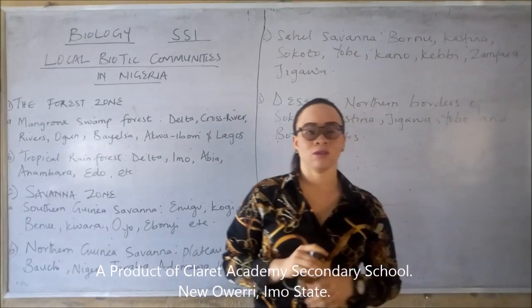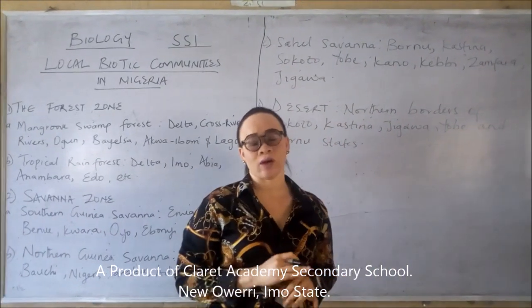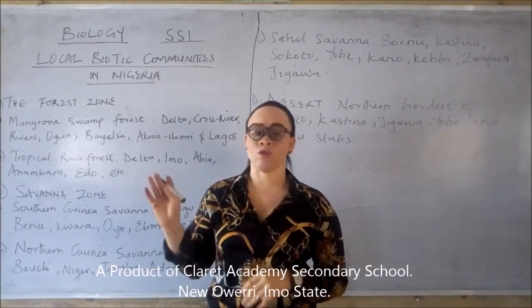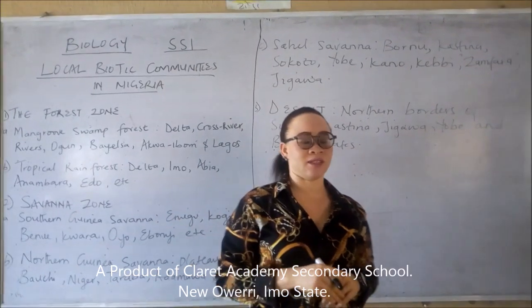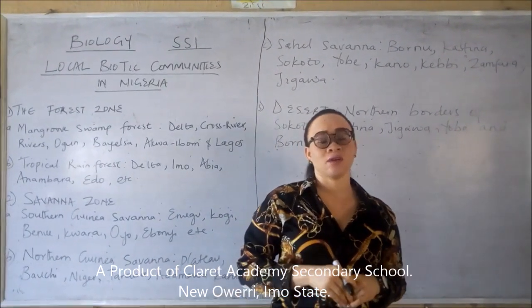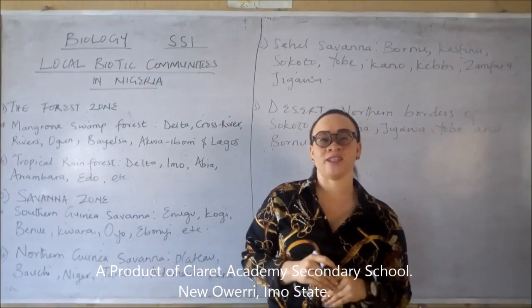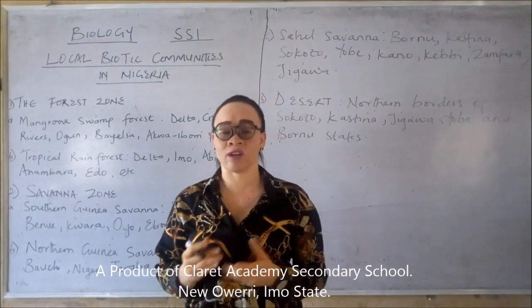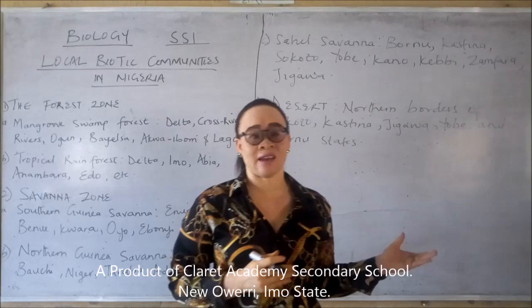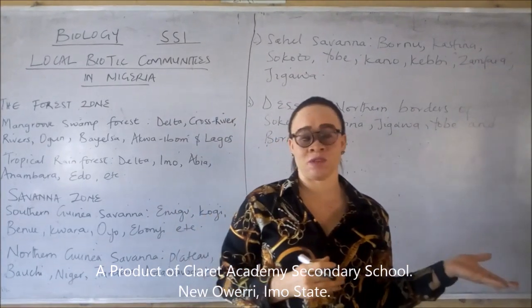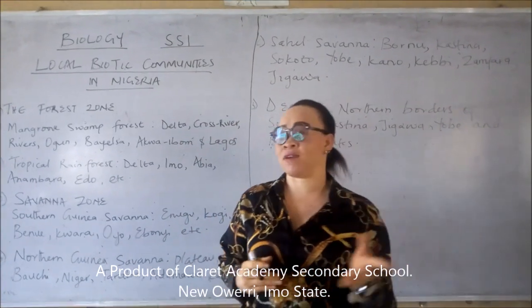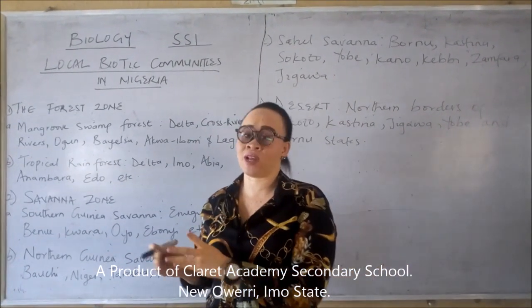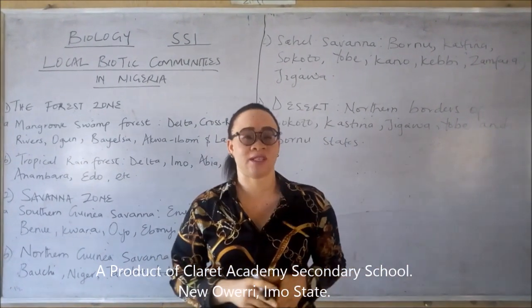Hello everyone. Today we are going to talk about the local biotic communities in Nigeria. A biotic community is the largest naturally occurring group of plants and animals, or different species, that are found in a particular location or habitat.